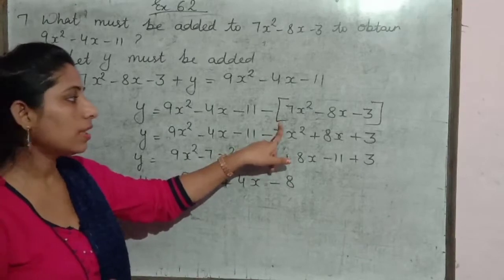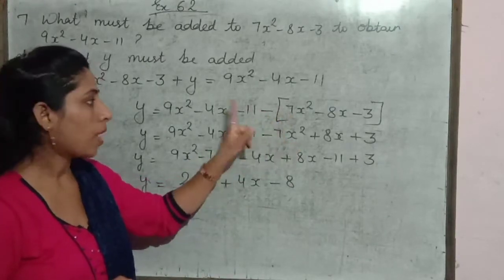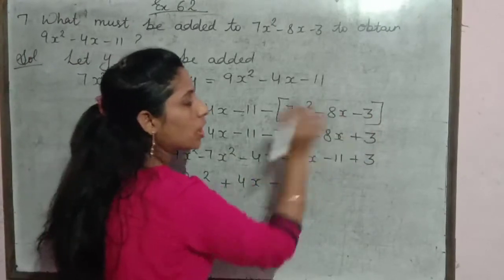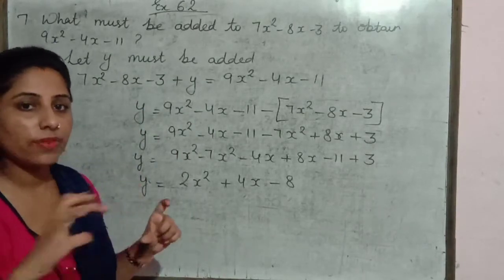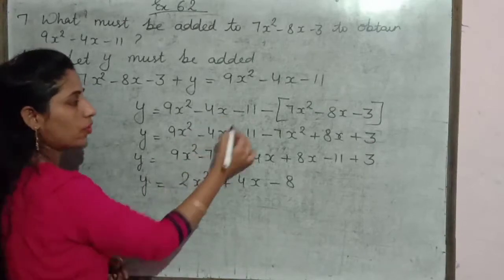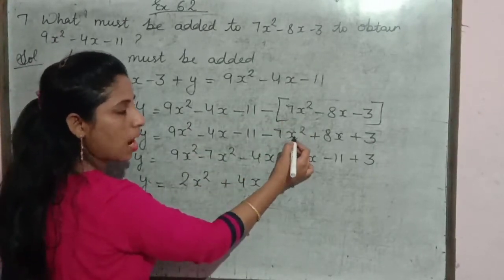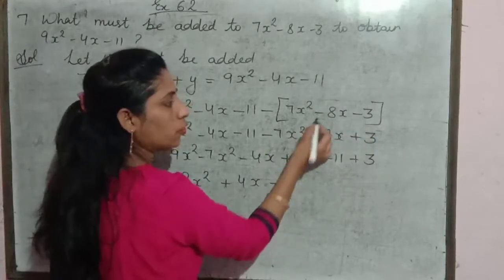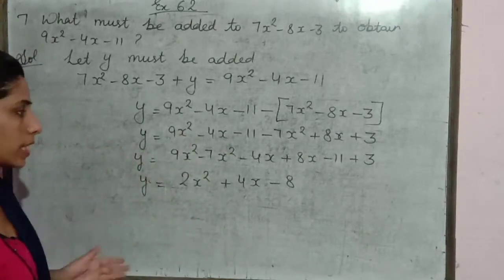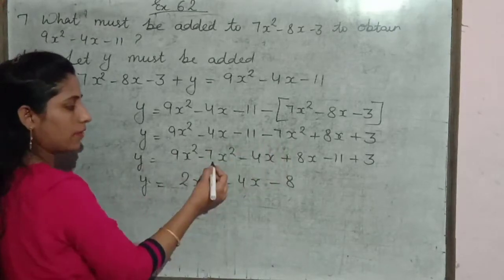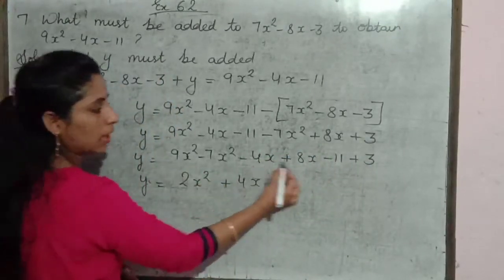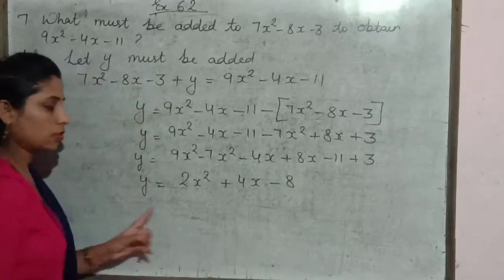Humne yahan bracket kyun lagayi hai? Because agar bracket nahi lagate, toh minus sign only 7 ke saath kaam hota. Bracket ke bahar minus ka sign hota hai toh andar ke signs change ho jaate hain. Jaise algebra mein subtraction karte hain, neeche wali terms ke saath sign change karte hain. Toh y is equal to 9x square minus 4x minus 11 minus bracket 7x square minus 8x minus 3 bracket close. Ab bracket hatane ke baad: minus 7x square becomes minus 7x square, plus 8x, plus 3. Now write like terms: y = 9x square minus 7x square, minus 4x plus 8x, minus 11 plus 3. Answer: 2x square plus 4x minus 8.